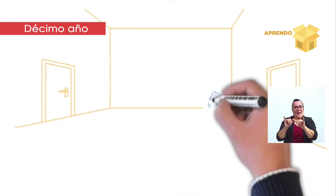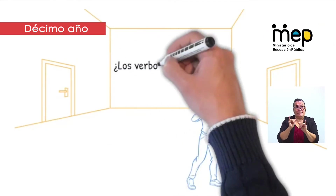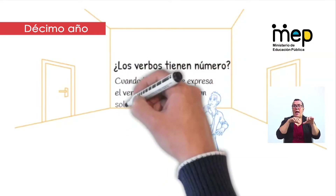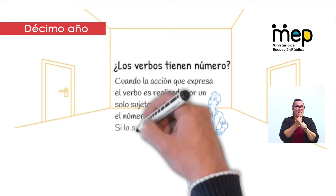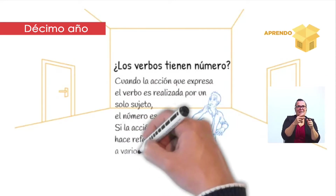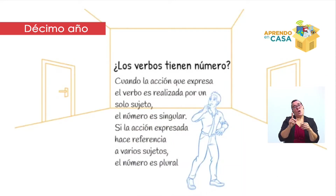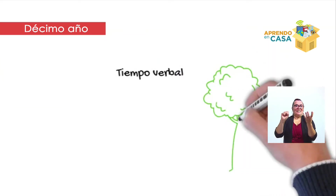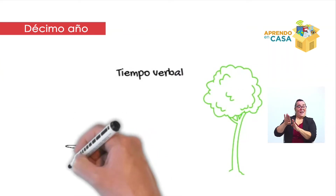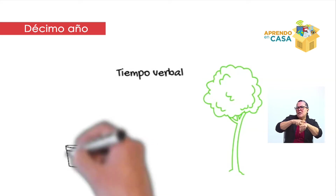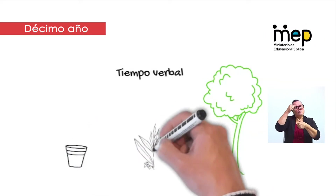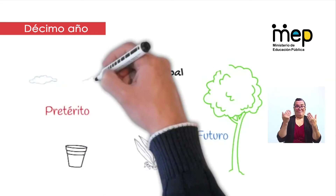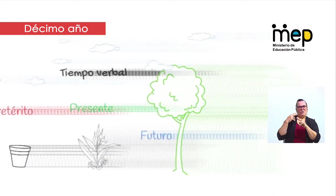Además, el verbo tiene número. Si la acción verbal la realizan dos o más personas se llama plural, y si solo una persona, es singular. ¿Y cómo podemos olvidar los tiempos verbales? Desde la escuela reconocemos que hay un pasado, un presente y un futuro. Sin embargo, al pasado lo llamaremos ahora pretérito.